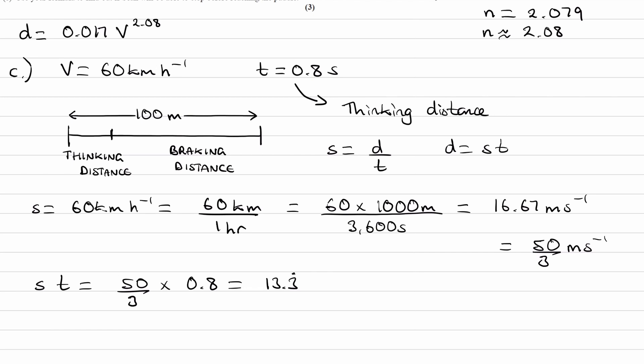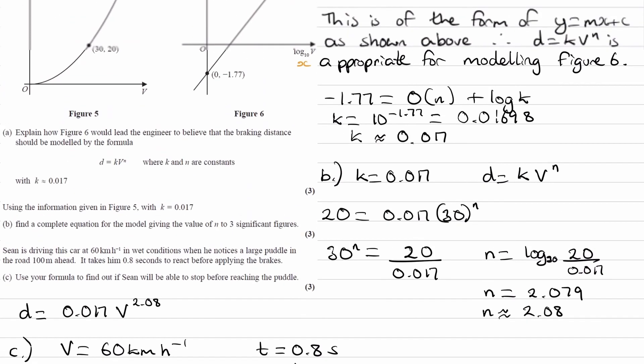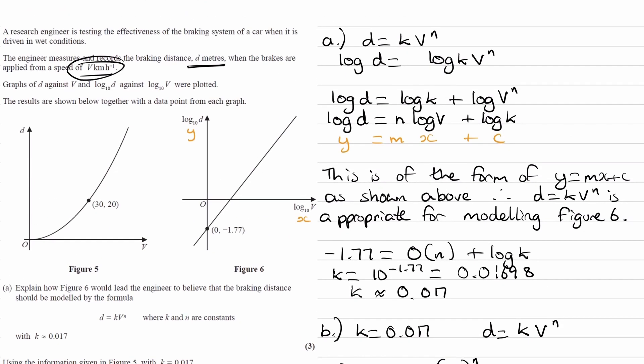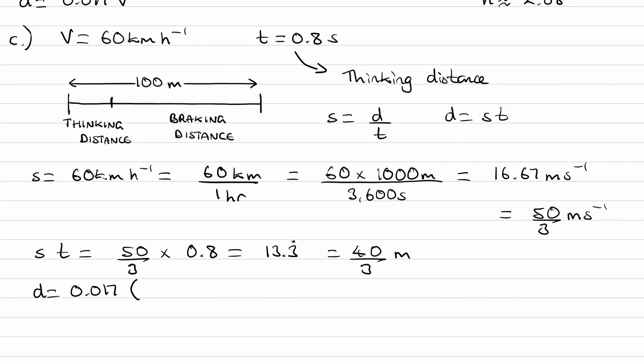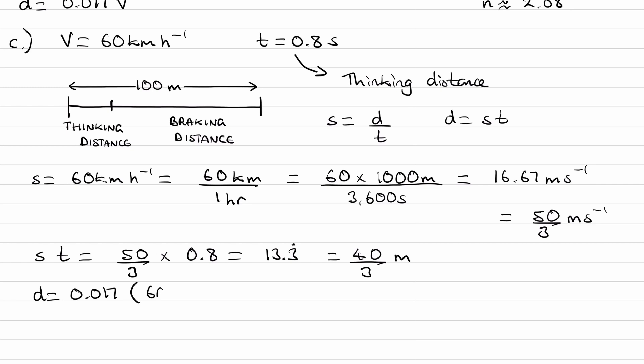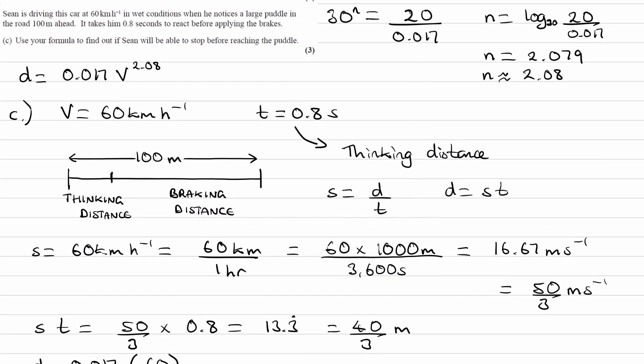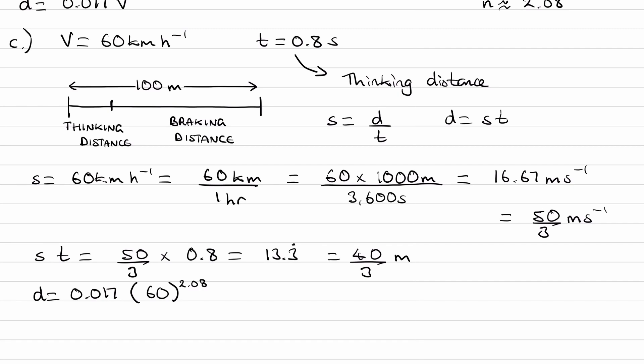Okay, so that is the thinking distance. Then for the braking distance, we can work that out by just putting this into the equation. So distance would be 0.017 times the speed—remember, the speed is meant to be in kilometers per hour, so we don't need to use the converted value—the speed will be 60, and then to the power of, if we scroll up to the equation, that was 2.08. And that gives us a braking distance of 84.919.